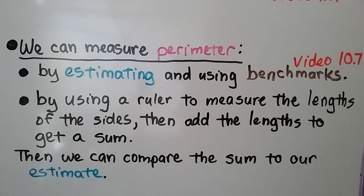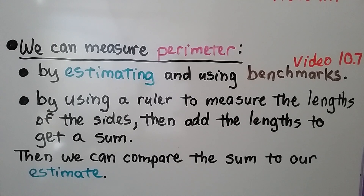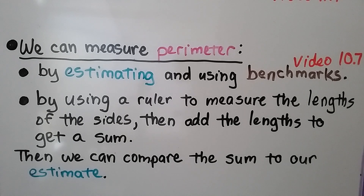We can measure perimeter by estimating and using benchmarks — we learned about that in video 10.7. We can also measure perimeter by using a ruler to measure the lengths of the sides, then add the lengths to get a sum.